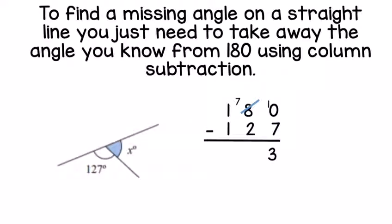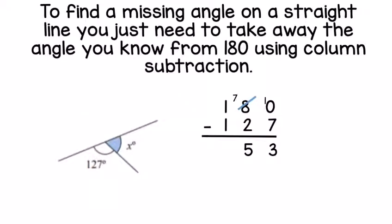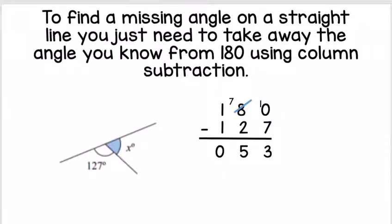Now you can complete your column subtraction. 10 take away 7 is 3. Move to your next column. 7 take away 2 is 5. And 1 take away 1 is 0. So your missing angle is 53 degrees.